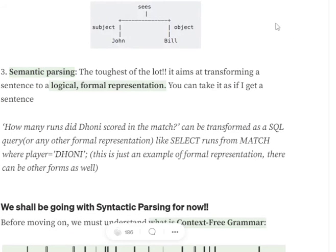The last one being semantic parsing. It is the toughest of the lot. It's aiming at transforming your sentence into a logical formal representation, something like SQL. If you have a sentence like how many runs did Dhoni scored in the last match, semantic parsing will try to reformulate this particular sentence, segment it in such a way that you can run a query on the sentence and get an answer. Like select runs from match where player equals to Dhoni. We are trying to understand the meaning of the sentence and eventually you can get answers to different questions.